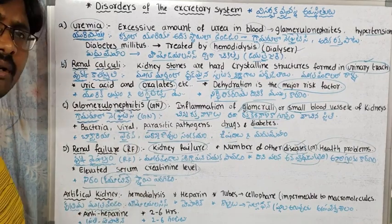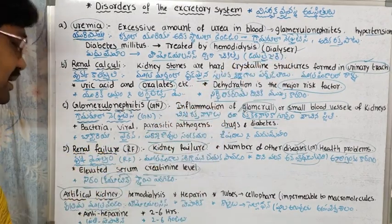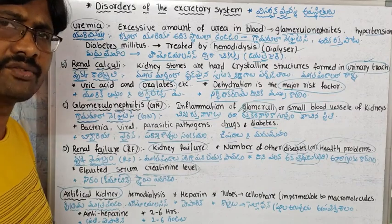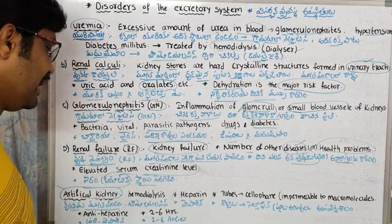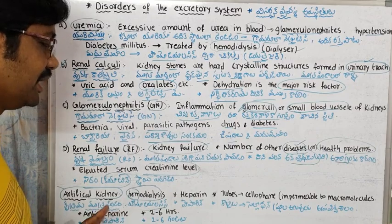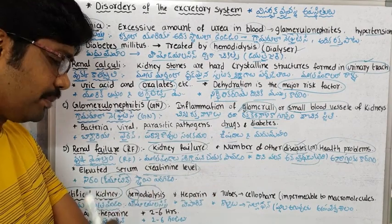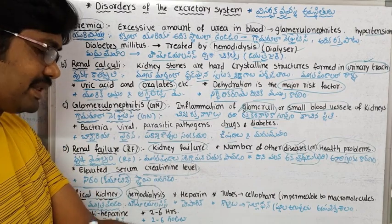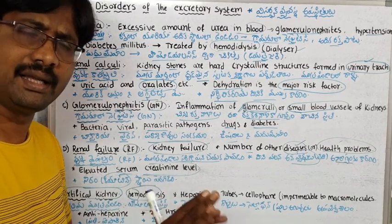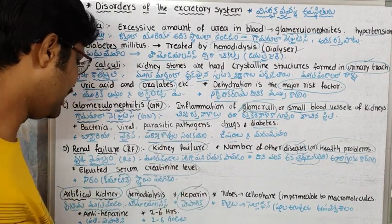The next topic is the artificial kidney. We will talk about the dialysis process. For uremia patients who have urea in the blood and kidney failure, we will perform hemodialysis. We use blood purification, and to prevent blood clotting during dialysis, we add heparin, an anticoagulant factor.